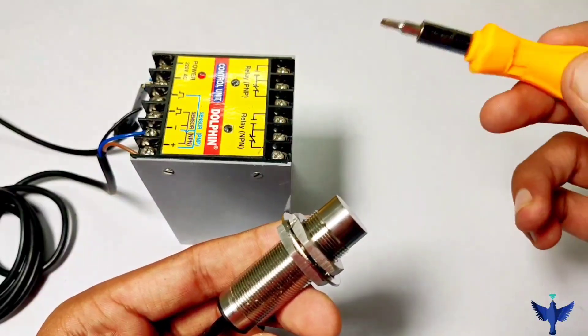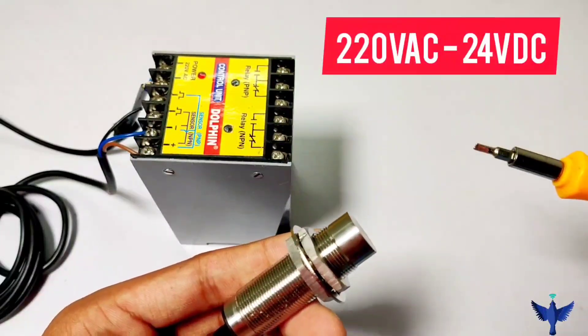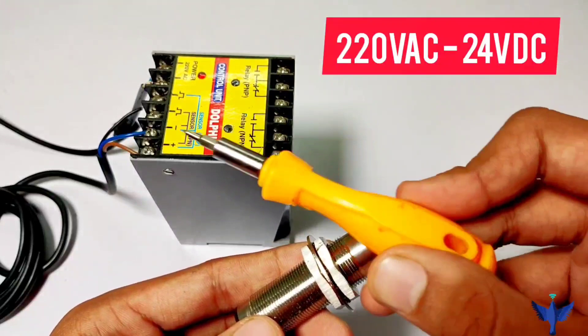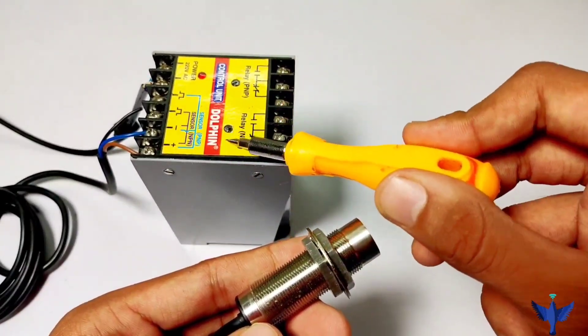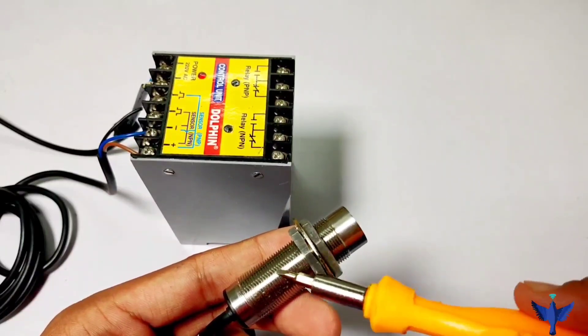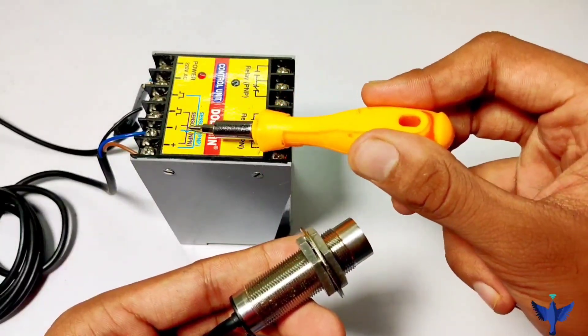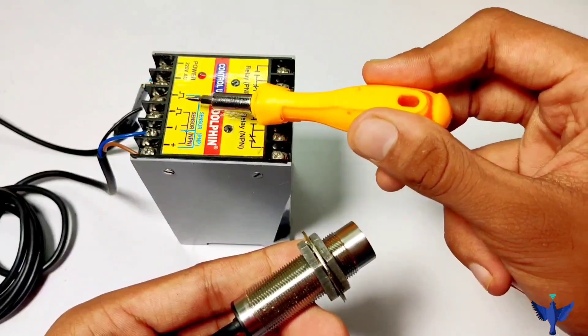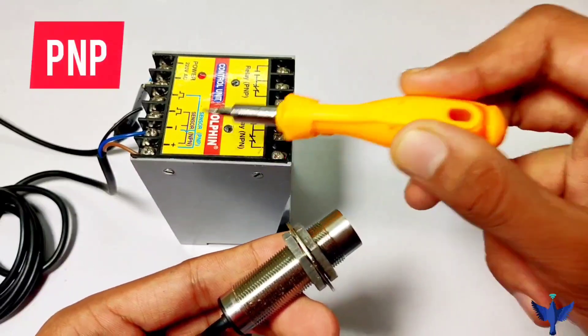I have done the connection accordingly. This is a sensor control unit which converts 220 volt AC to 24 volt DC. Positive and negative are connected to this control unit, and this sensor is getting 24 volt DC. Brown wire is positive, blue wire is negative. Black wire is the output, connected to this terminal because this sensor is PNP type.